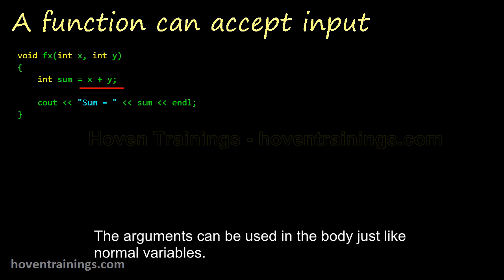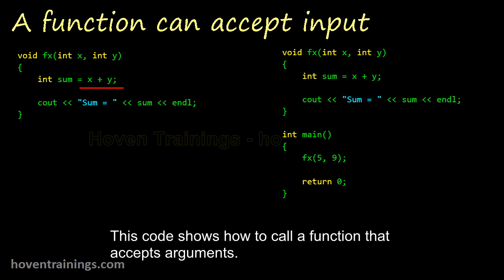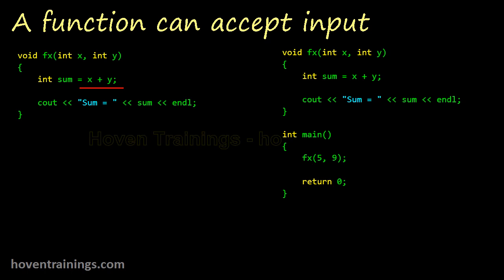The arguments can be used in the body just like normal variables. This code shows how to call a function that accepts arguments. The arguments can be passed like this. They will be passed left to right. This means 5 will be copied to x, and 9 will be copied to y.